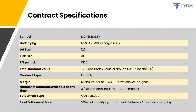Here are the contract specifications of the ICOMDEX Energy Index futures contract. The lot size is 125, and at the current index value of around 6,000, the total contract value is approximately ₹7.5 lakhs. The tick size is ₹1, meaning a 1-point move in the index leads to a profit or loss of ₹125. It is a monthly contract and at any point in time, three contracts are available for trading: near month, next month, and far month. The margin required is a minimum of 10% or SPAN plus ELM, whichever is higher, and the contract is settled in cash.